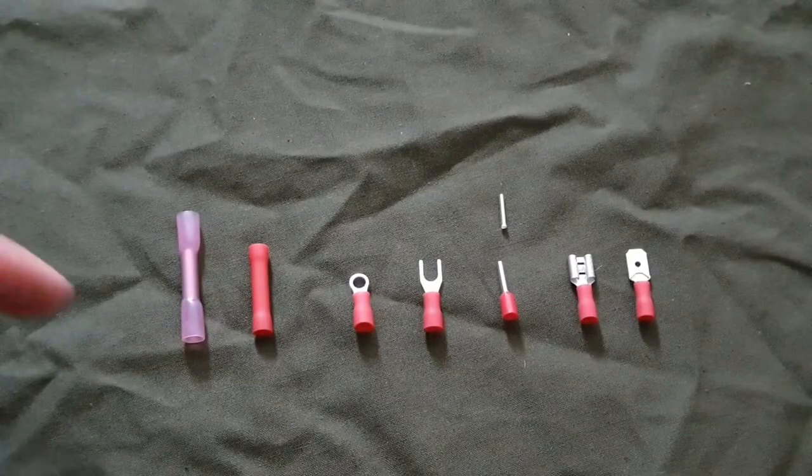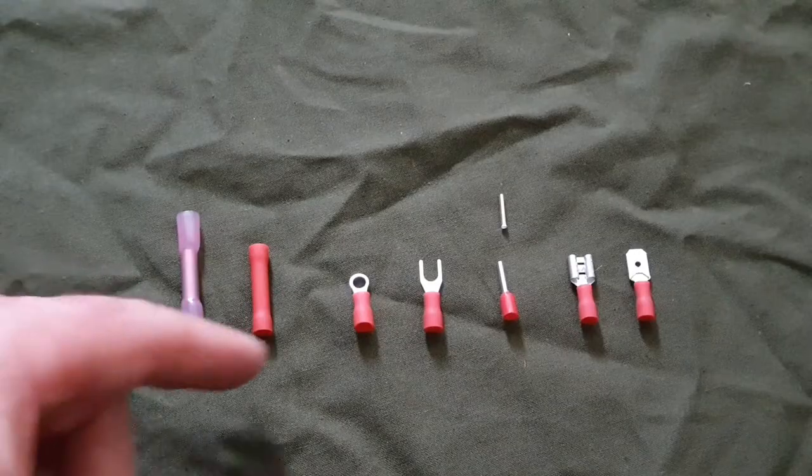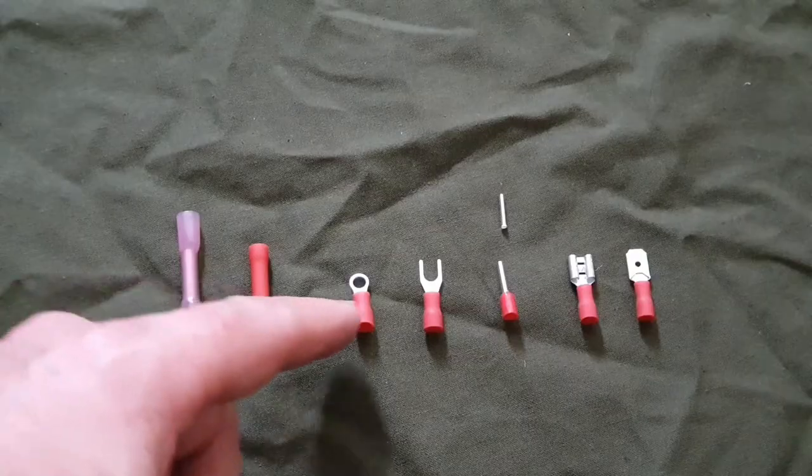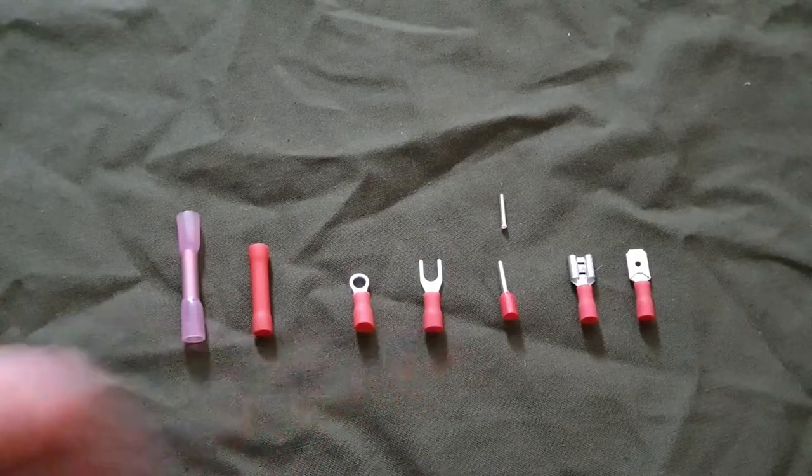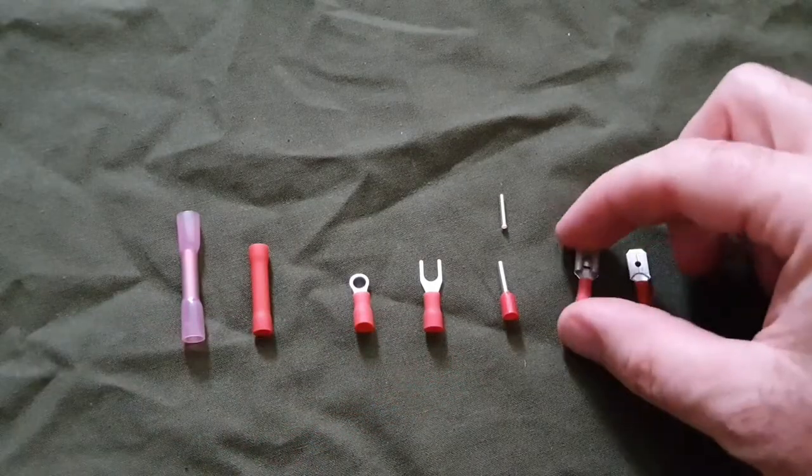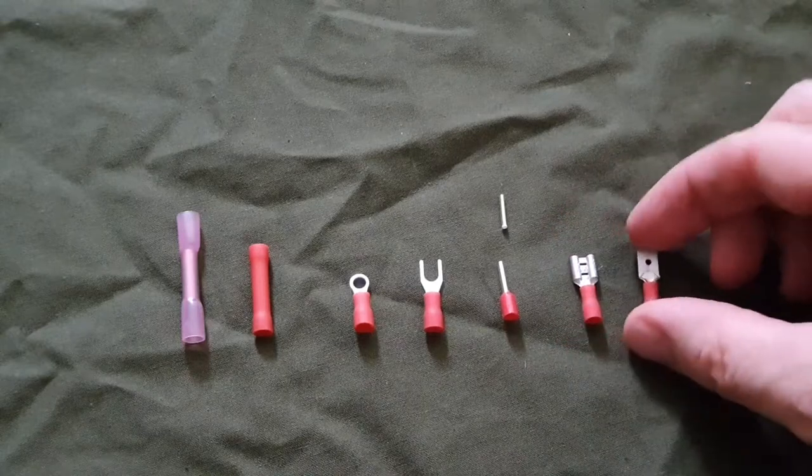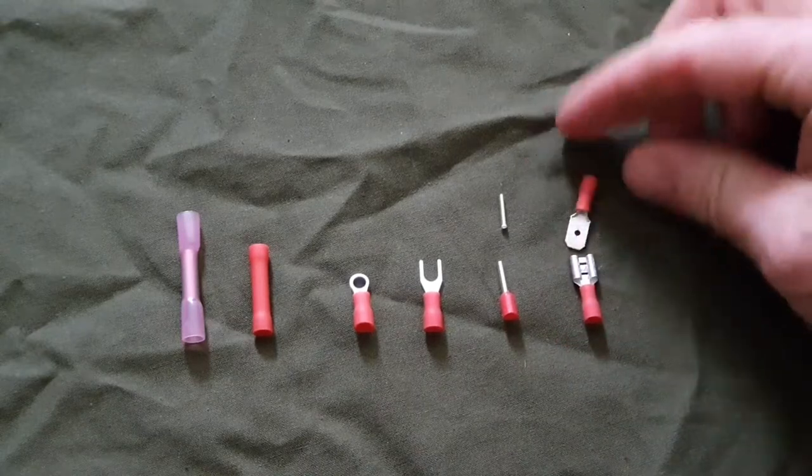From left to right we have a heat shrink butt connector, a normal butt connector, a ring connector, fork connector, a bullet connector, then we have a female spade and a male spade, and they can just slot into each other.